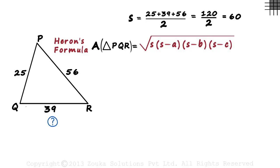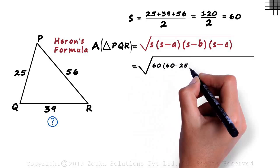We just need to be a little careful with the calculations here as the numbers when multiplied get really big. The area would equal square root of 60 multiplied by 60 minus 25 multiplied by 60 minus 39 multiplied by 60 minus 56.